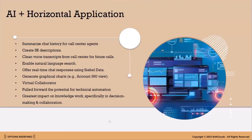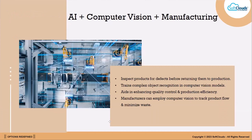From a horizontal application perspective, AI can create service request descriptions and enable natural language search — for example, a user typing 'show me accounts created by Saravana' would retrieve the relevant data. It can generate graphical charts and provide a 360-degree view, and it plays a pivotal role in manufacturing industries as well.